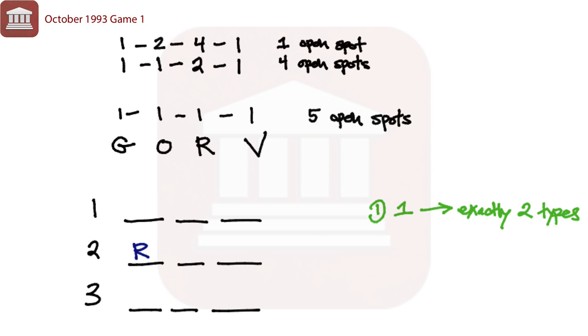The third and final condition tells us that corsage three must contain at least one gardenia but no orchids. So we know that corsage three is going to have at least one gardenia but no orchids. So our orchid is going to appear in either one or two because we have to have an orchid and at this point we haven't placed it. Can't be in three, must be in either one or two. And that would be the setup for this game.